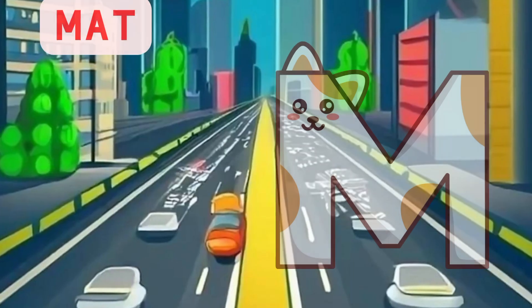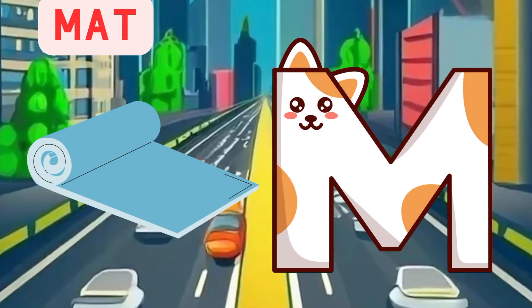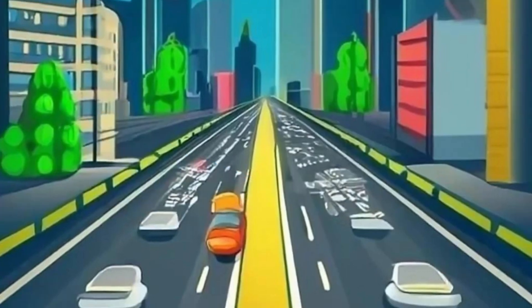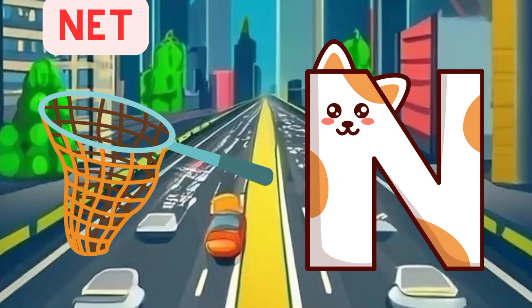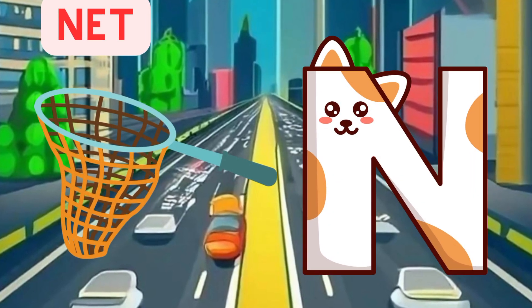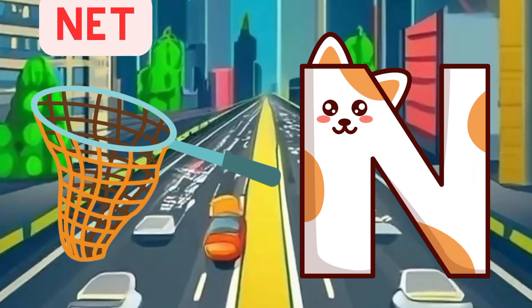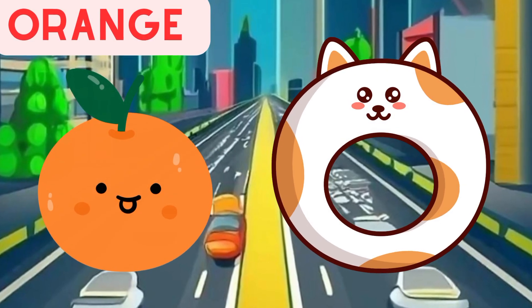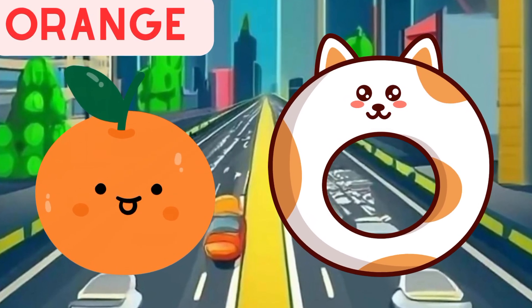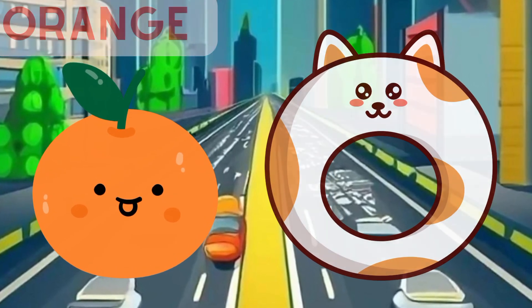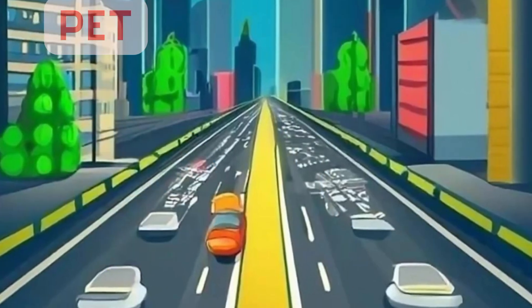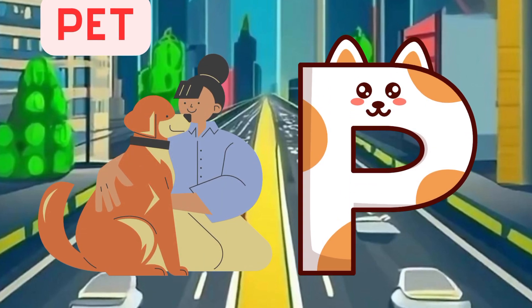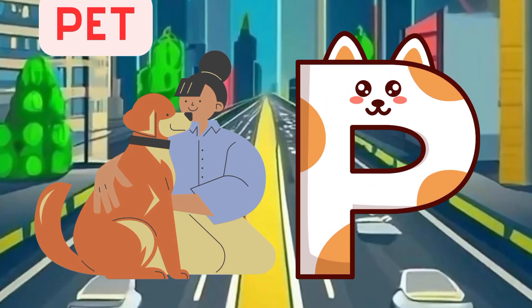M is for mat, m-m-mat. N is for net, n-n-net. O is for orange, o-o-orange. P is for pet, p-p-pet.